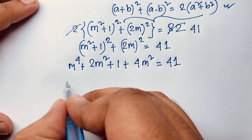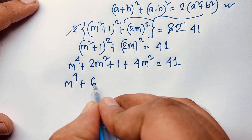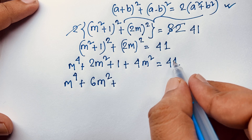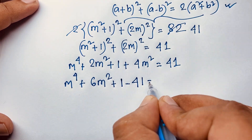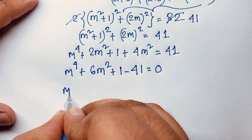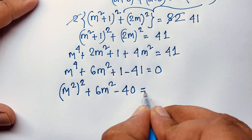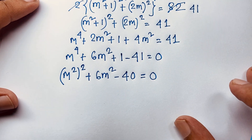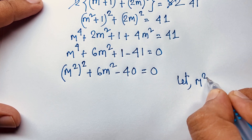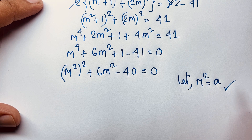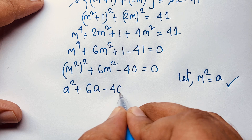You can say here: m^4, plus 2m^2 and 4m^2 combined will be 6m^2. And if I move this 41 to this side, it will be negative 41, so 1 minus 41 gives negative 40. So we have m^4 + 6m^2 − 40 = 0.